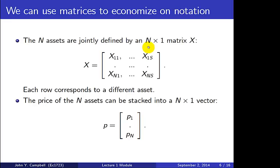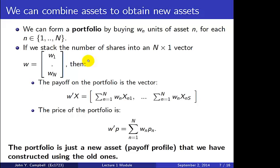Similarly, we can stack the N asset prices into an N-by-1 vector, written little p, with the price of the first asset at the top running down to the price of the Nth asset. The next point is that we can combine assets to obtain new assets or portfolios — the construction of a portfolio is a very basic concept in capital markets.